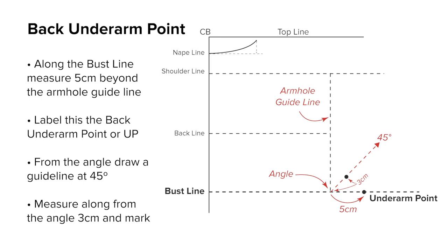The back underarm point. Where this line meets the bust line, extend the line out 5 centimeters and label it back underarm point. At the angle made by the armhole guide and the bust line, draw a guide line at 45 degrees and measure along 3 centimeters — a little less for small sizes and up to 4 centimeters for larger sizes.